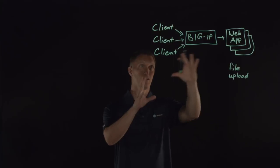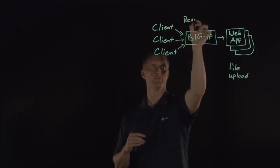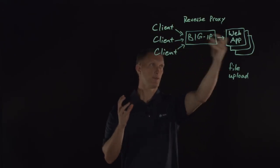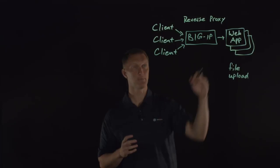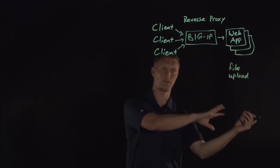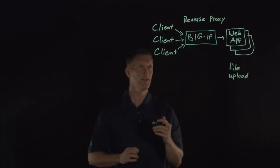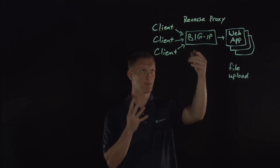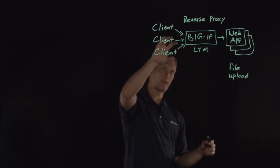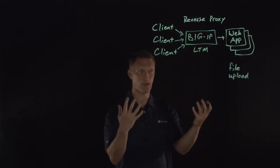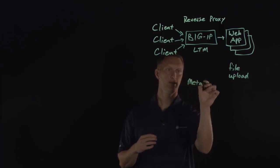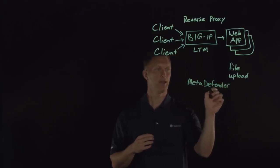In this specific scenario, I'll note this is a reverse proxy setup — everything coming into the web application comes through the BIG-IP. You could flip this on its head and use it from an internal network perspective as well, but in this reverse proxy situation with BIG-IP, we have LTM provisioned, and we are going to interact with the product called Meta Defender that Opswat offers.